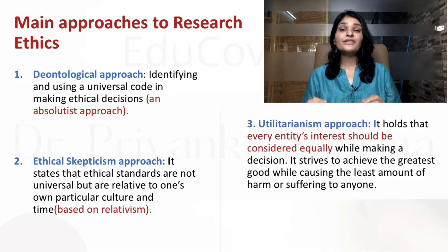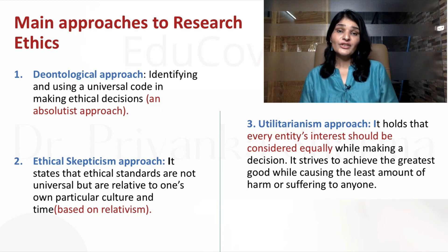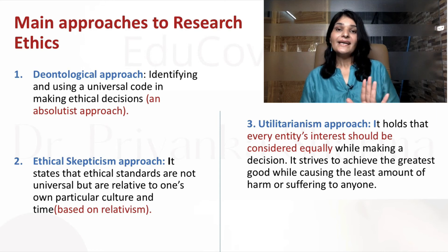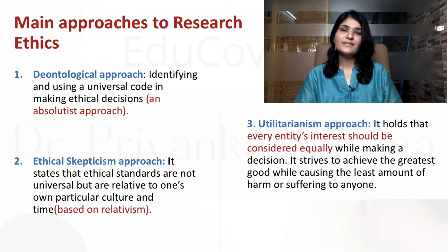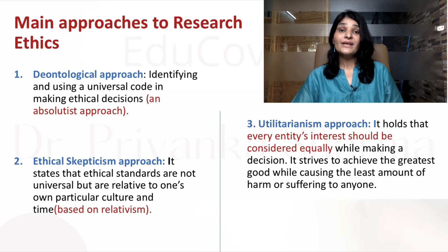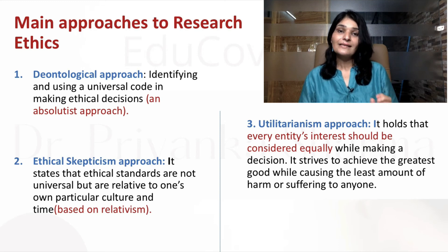Now let's look at the three main approaches to research ethics, which you should know from the UGC Net Paper 1 point of view. The first is the deontological approach. Researchers following this approach say there should be a universal ethical code — universal ethics that apply in every country, irrespective of their culture, values, religion, or region. They identify and use a universal code in making ethical decisions. This is an absolutist approach.